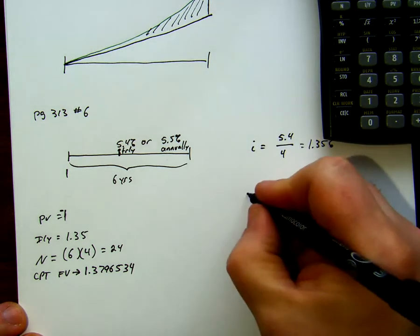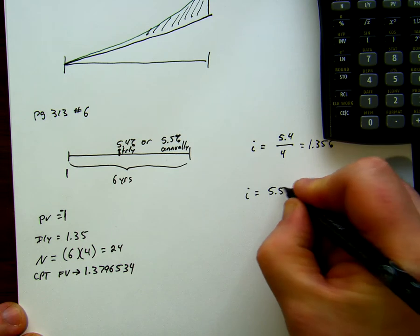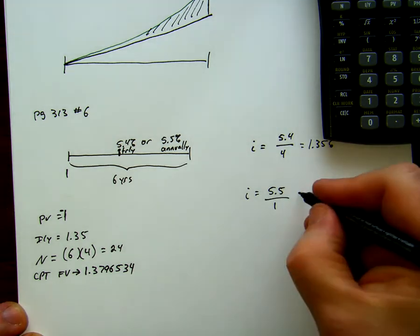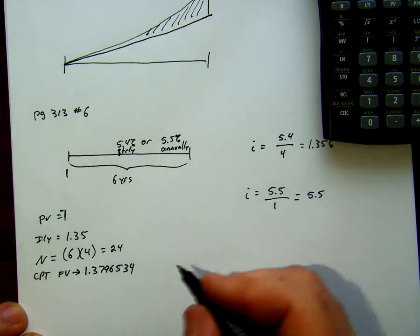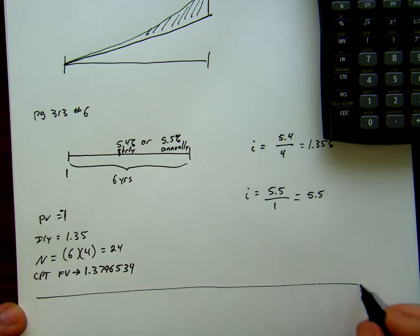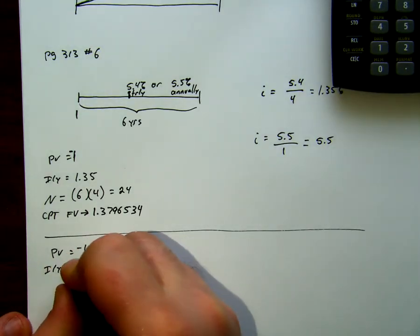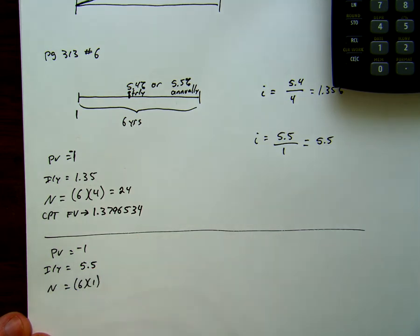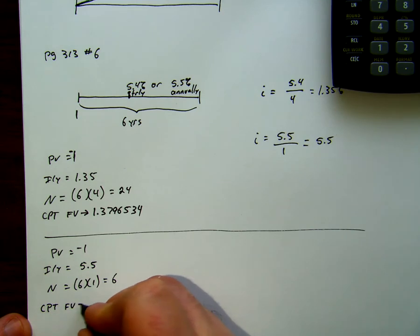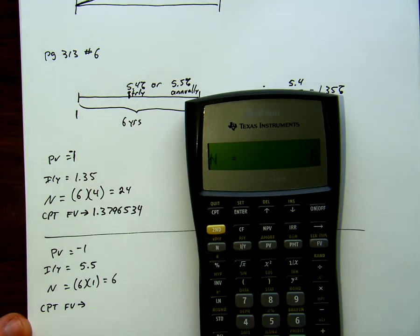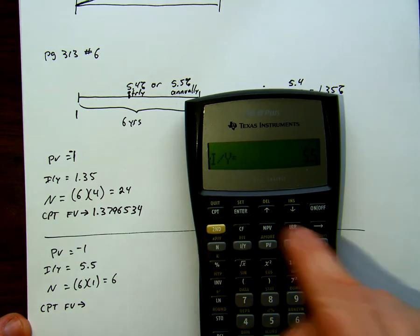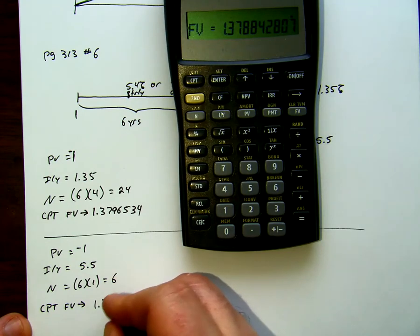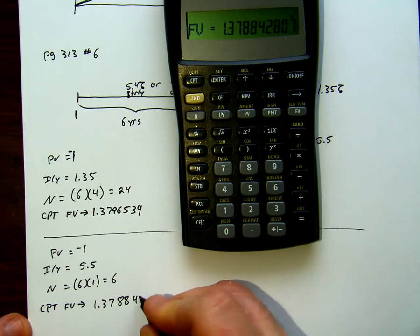If we compare that to our other rate, well, our i for our other rate is 5.5% once per year. So, that's equal to 5.5. We have a separate problem that says, again, our present value is going to be negative 1 because that's our $1 investment. Our i per y is going to be 5.5 and our n now is going to be 6 years once per year. That's 6. I'm going to compute the future value to be 6n, 5.5i, compute the future value 1.3788428.